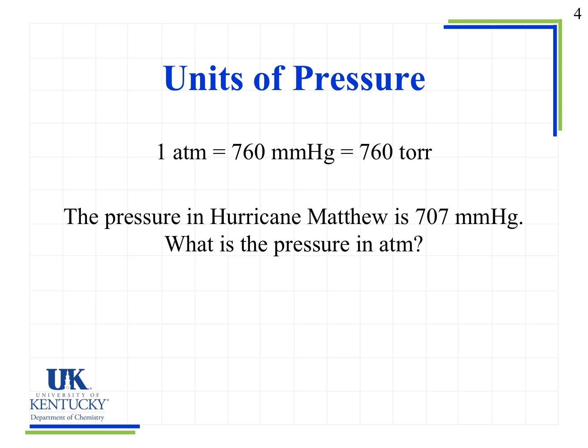There are many units of pressure; the ones you're responsible for knowing are: one atmosphere, which represents typical atmospheric pressure, 760 millimeters of mercury, and 760 torr. There are also units like pascals and kilopascals, but those just involve different conversion factors. Given a conversion factor, you should be able to solve those problems, but the atmosphere and millimeters of mercury equivalents are the ones you need to memorize.